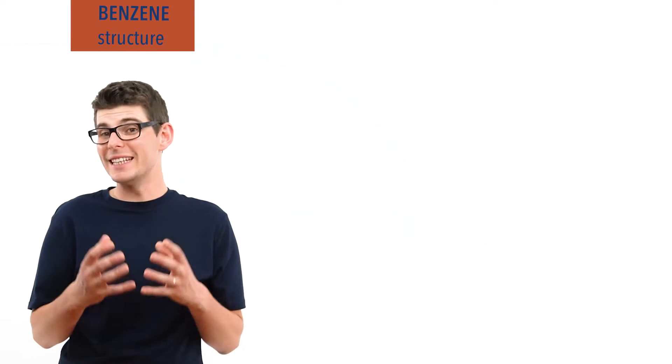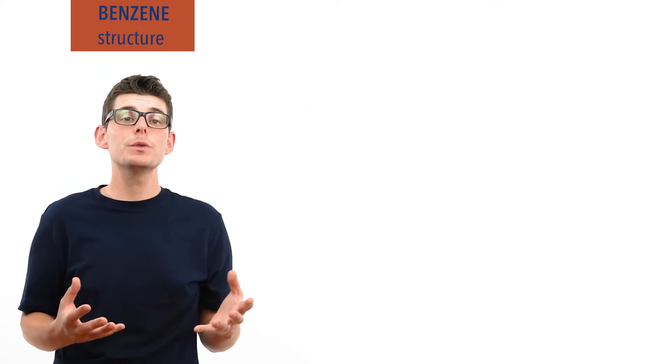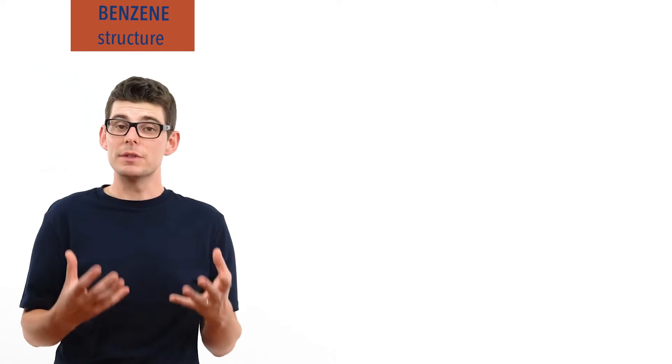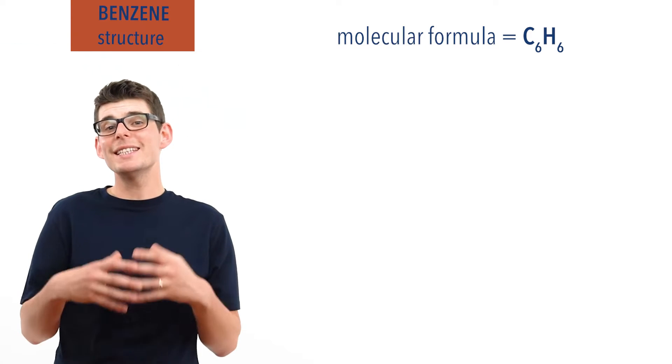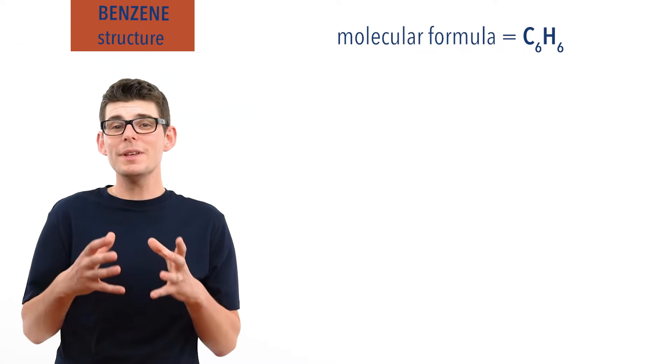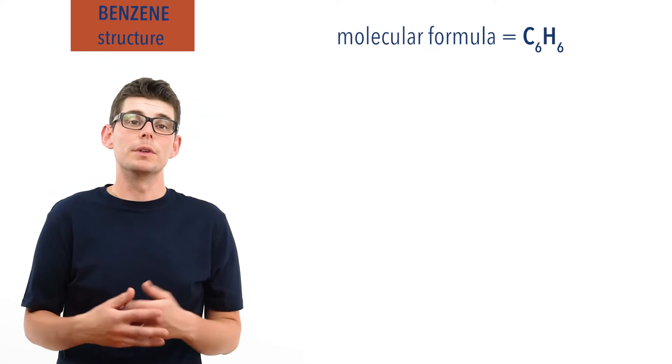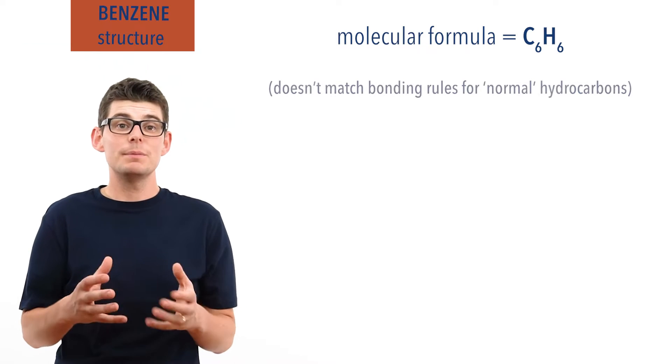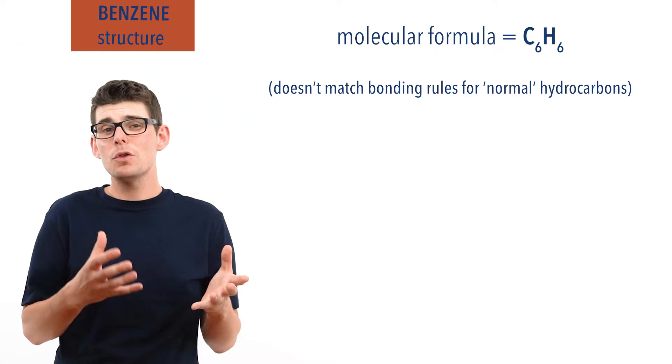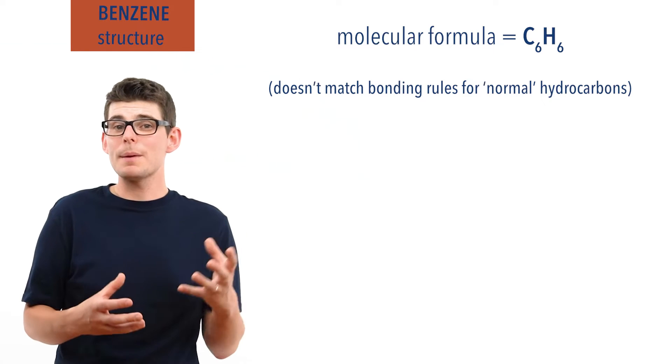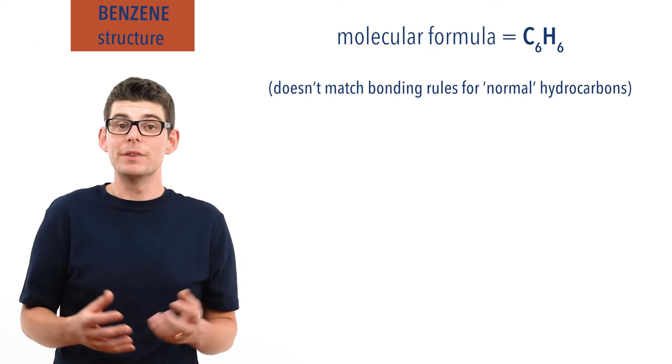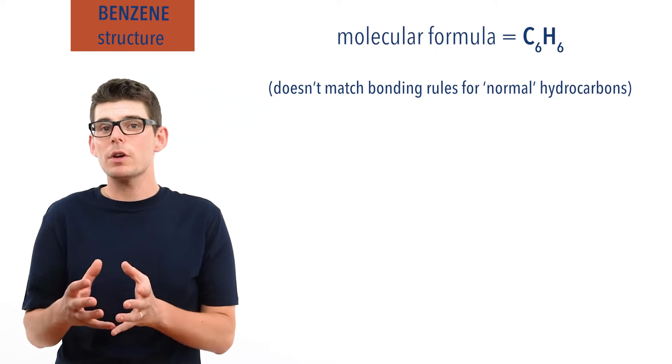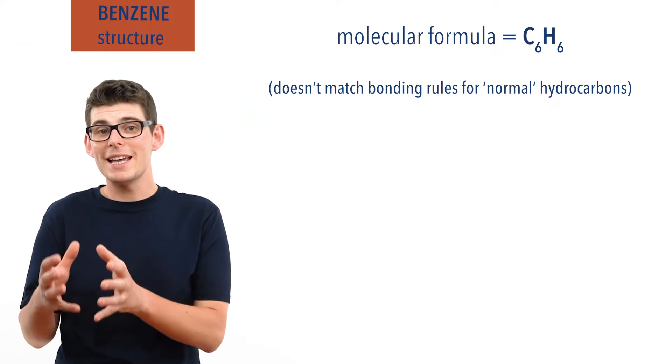Recap done, let's go! Benzene was discovered in 1825 and soon after its molecular formula was determined to be C6H6. This presented a problem for chemists as the formula didn't follow any of the usual bonding rules that other hydrocarbons seemed to. To have that formula scientists knew there must be double or even triple carbon bonds in the structure, and yet benzene was relatively unreactive compared to other compounds with those types of bonds in.